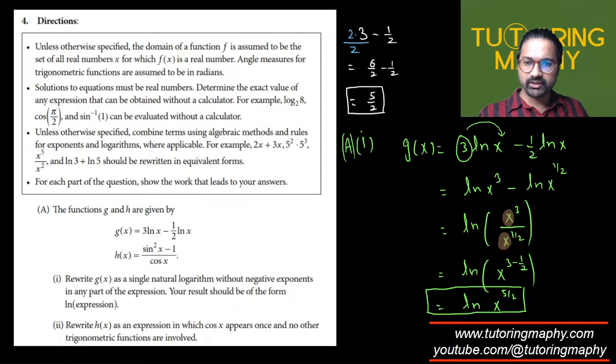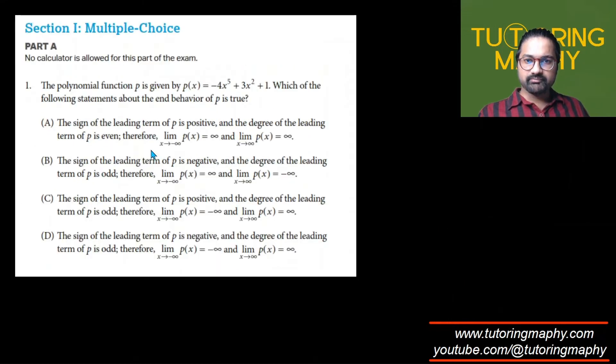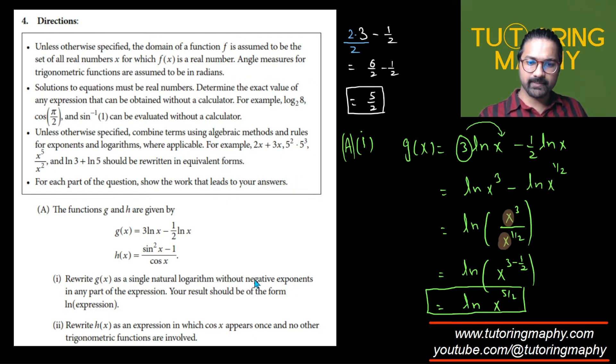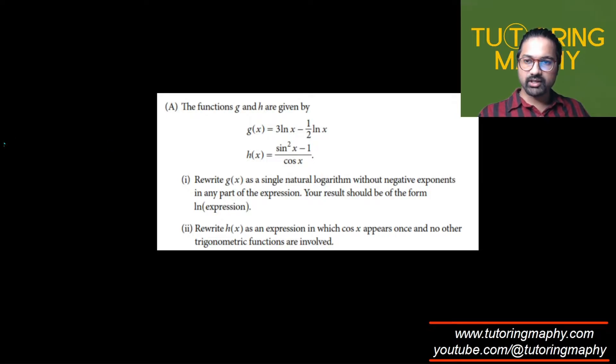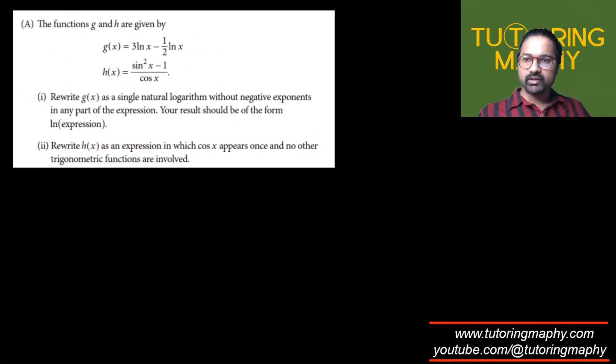That's correct, absolutely. The subpart 2 of part A says that rewrite h(x) as an expression in which cos(x) appears once and no other trigonometric functions are involved. So they just want cos to be one of the function. Let me make a replica of this and go over to the next page. In part 2, we want to rewrite everything only in terms of cosine that should appear only once.